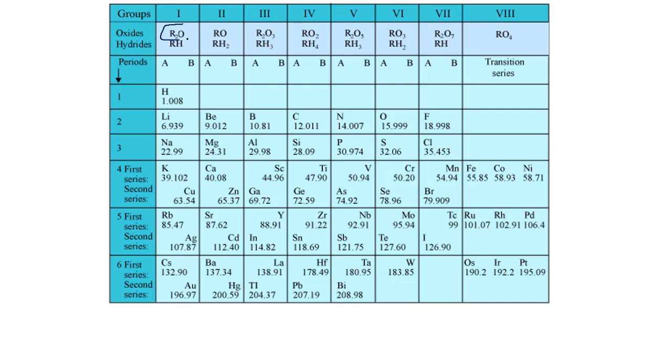I will show you this in this Mendeleev's periodic table. Here you can see he has written R2O and RH. These are the compounds formed by these elements. Similarly, in next column, he has shown RO and RH2. R2O3 and RH3 and so on. This is the Mendeleev's periodic table. And now let us look at the periodic table.